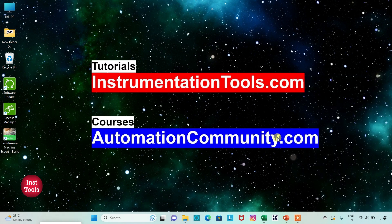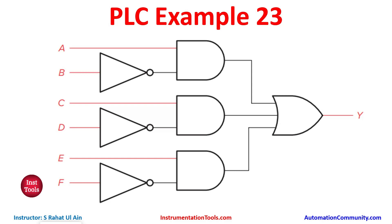Hello friends, welcome to Automation Community. Today in this video we are going to discuss an example in which we will draw a ladder diagram for a logic gate circuit. In example 23, there is an AND gate with the output A and B, another AND gate with the input C and D, and another AND gate with the input E and F. Then there is an OR gate with the output of AB, CD, and EF.